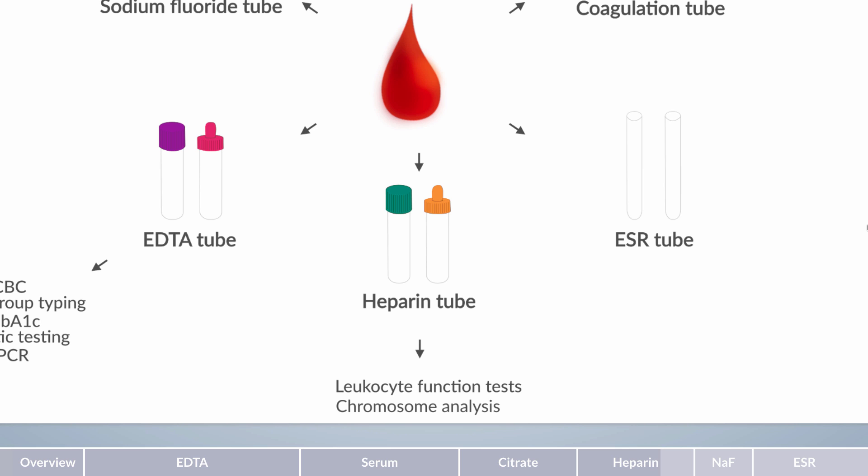Therefore, sensitive parameters can be detected over a longer period of time. Consequently, EDTA tubes have become a standard in the measurement of numerous laboratory parameters. Yet, EDTA tubes also have a disadvantage. EDTA affects cell function and is therefore unsuitable for functional analysis. For this reason, heparin tubes are the preferred choice in analyzing cell function.